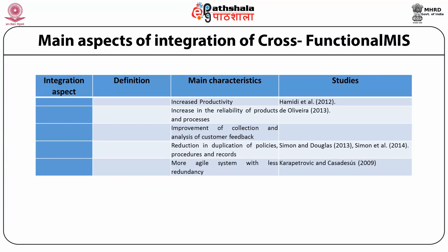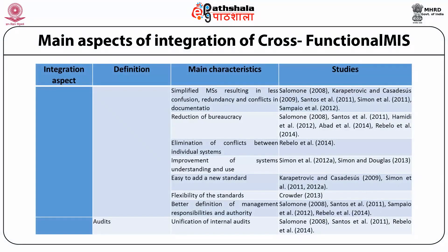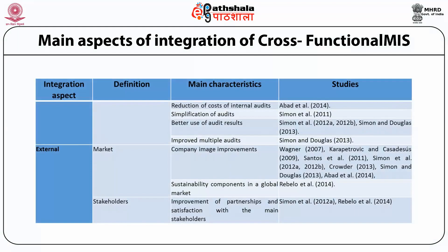Additional benefits include reduction in duplication of policies, procedures and records; more agile systems; simplified management systems resulting in less confusion, redundancy, and conflicts; reduction of bureaucracy; elimination of conflicts; improvement of systems understanding and use; easy to add a new standard; flexibility of standards; better definition of management responsibilities and authority. The audit aspect is characterized by unification of internal audits, reduction of cost of internal audits, simplification of audits, and better use of audit results. The market aspect in terms of external environment is characterized by company image improvement.